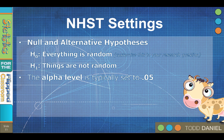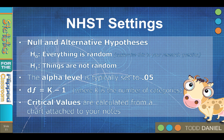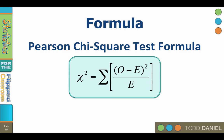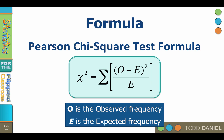The alpha level is typically set to 0.05, but it can be 0.01 or any other level chosen by the researcher. The degrees of freedom is k minus 1, where k is the number of categories. The critical value is calculated from the chi-square values table based on degrees of freedom and alpha. The formula for the Pearson chi-square test is: chi-square equals the sum of (O minus E) squared divided by E, where O equals the observed frequency and E is the expected frequency. Unlike parametric formulas, with chi-square we apply this formula for each category and then add them all up at the end. An example will be shown in the next video.